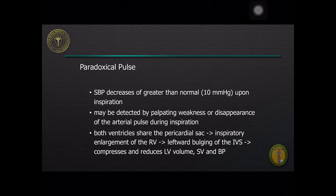Paradoxical pulse may be detected by palpating weakness or disappearance of the arterial pulse during inspiration. Since both ventricles share the pericardial sac, inspiratory enlargement of the right ventricle causes leftward bowing of the interventricular septum, resulting in compression and reduction of the left ventricular volume, stroke volume, and blood pressure.